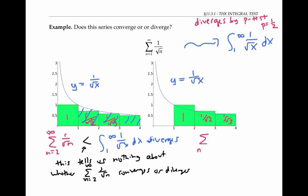But now we have that the total area of the green rectangles is bigger than the integral from one to infinity of one over the square root of x dx. Since this integral diverges and this series is larger, it must diverge also.